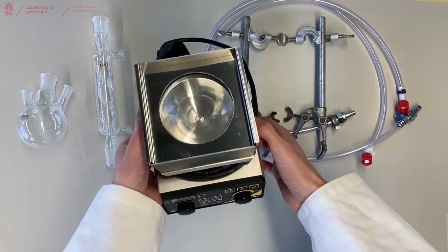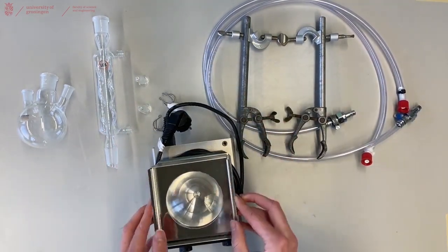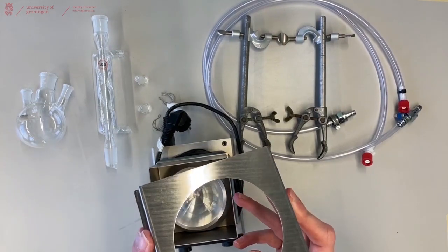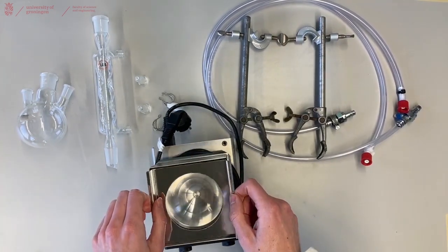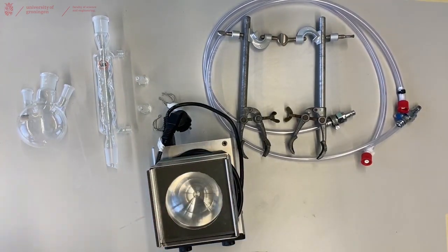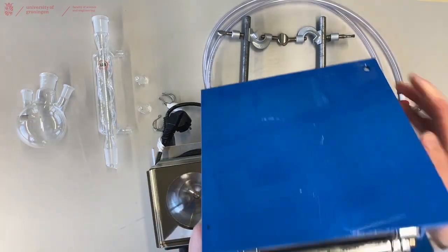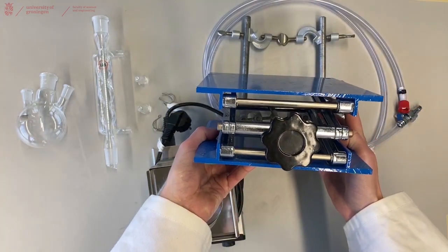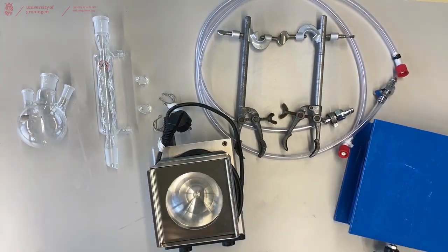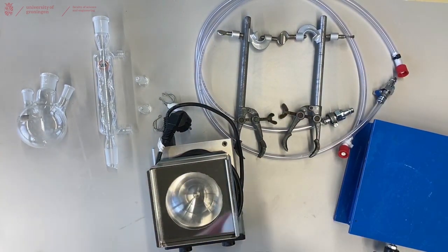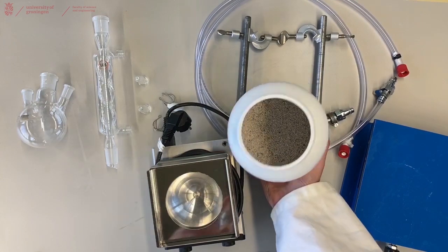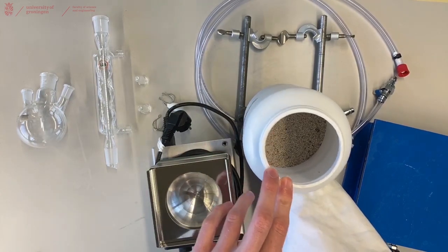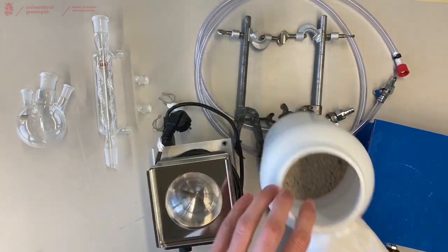You'll need one IKA heating mantle with a matching metal insert for the round bottom flask you're using, one lab jack, and sand for your IKA to improve conduction of heat between the heater and your glass.